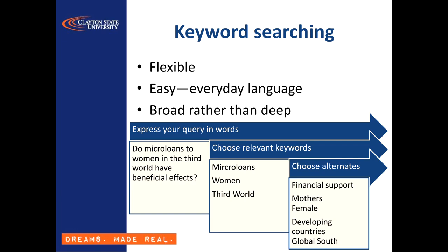Keyword searching is the first strategy. It's flexible because it can accommodate any words you care to search on. It's also fairly intuitive, although you can fall into the error of thinking the computer actually understands English, which it very much doesn't — it's just treating your words as strings of letters. Keyword searching is a good way to begin your search because it's broad rather than deep, meaning you're likely to retrieve a large number of results, but those results may not be super focused. Keyword searching is probably familiar to you if you've used Google or any other web search engine, but there are some ways that you can make it more powerful.